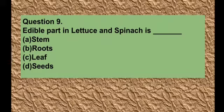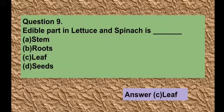Question number nine: The edible part of lettuce and spinach is — option A stem, option B roots, option C leaf, option D seeds. The correct answer is option C — leaf. It is a very simple question.